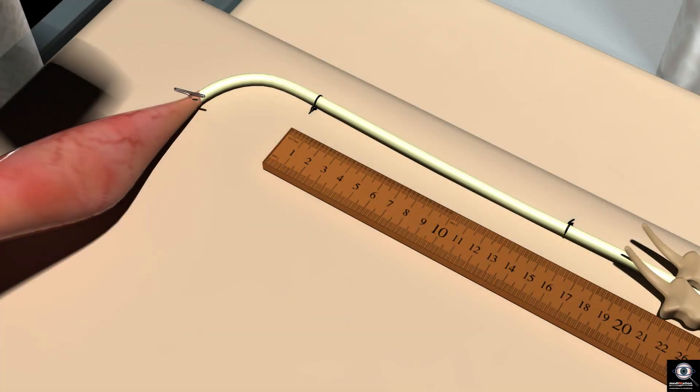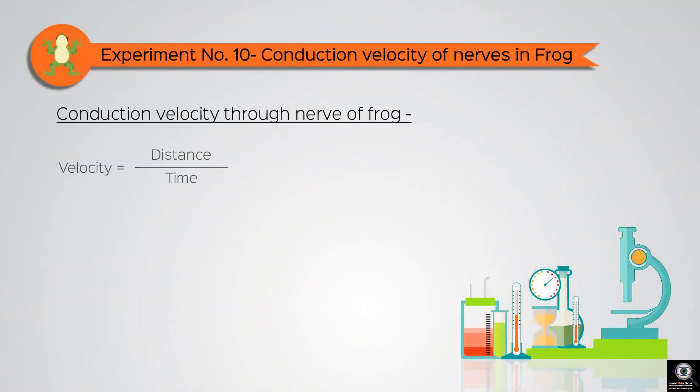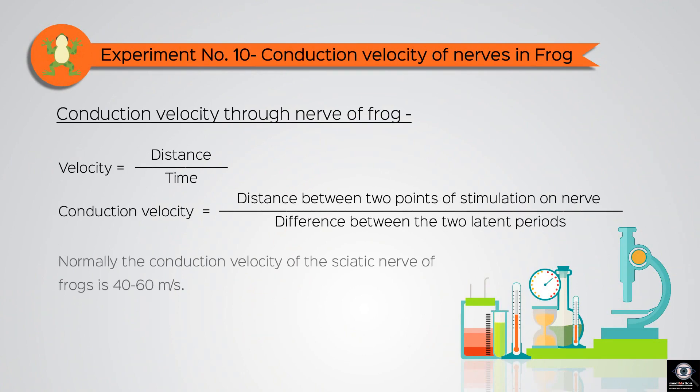We already know the distance between the two points of stimulation. Now, it becomes easy to calculate the speed or velocity of conduction of the nerve using the formula velocity is equal to distance divided by time. Thus, the conduction velocity is equal to the distance between the two points of stimulation on the nerve divided by the difference between the two latent periods.